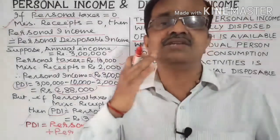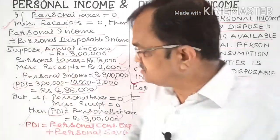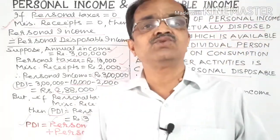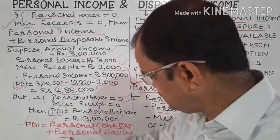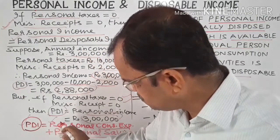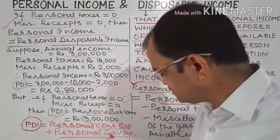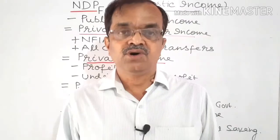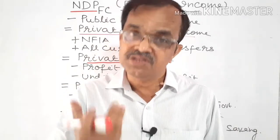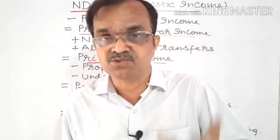Personal disposable income is divided into two components: one is personal consumption expenditure, also called household consumption expenditure, and the other is personal savings, also called household savings. Thus, personal disposable income is the sum total of personal consumption expenditure and personal savings.